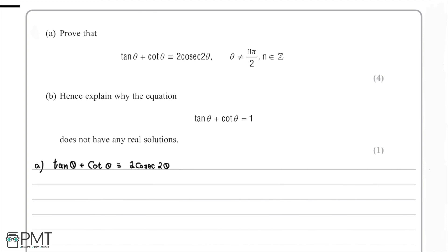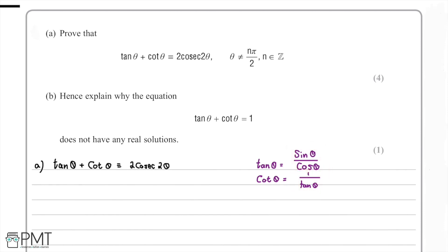Whenever we see tan theta, a good way to rewrite it is: tan theta equals sin theta divided by cos theta. For our second term, cot theta is equal to 1 over tan theta. Since tan theta equals sin theta over cos theta, we flip that fraction, so cot theta equals cos theta divided by sin theta.